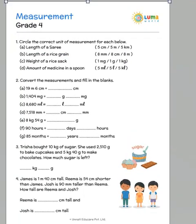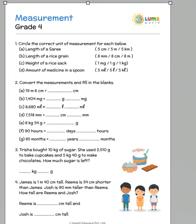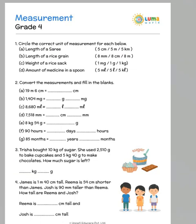For the worksheet on measurement, circle the correct unit of measurement for each. The length of the saree is 5 meters, because 5 kilometers is too big a unit and 5 centimeters is too small. The length of a rice grain would be 8 millimeters because it is a small rice grain and the measurement would be in millimeter. The weight of a rice sack would be about 1 kg.